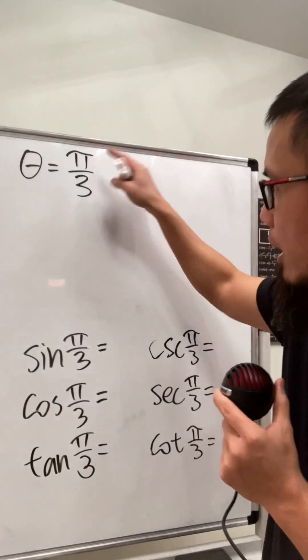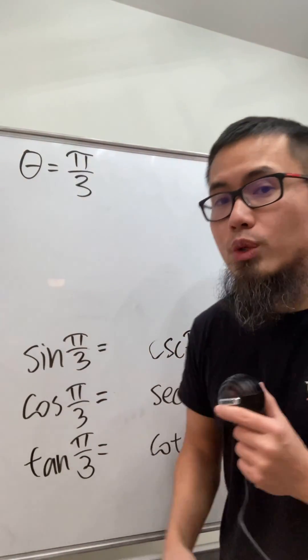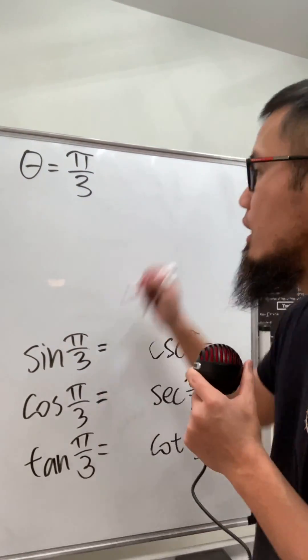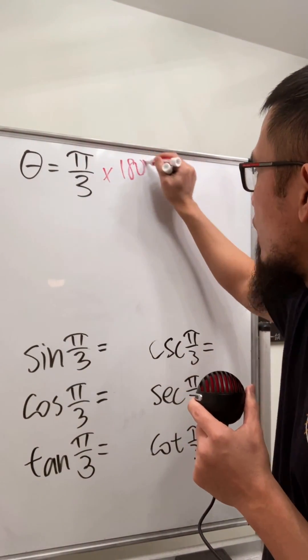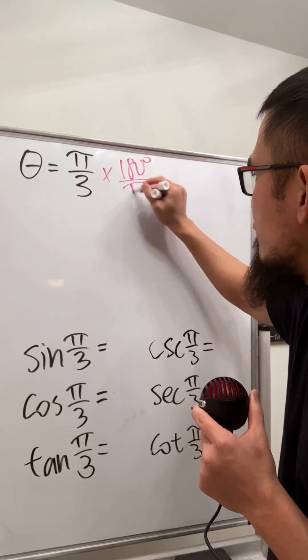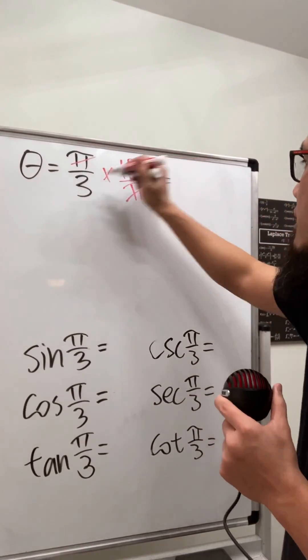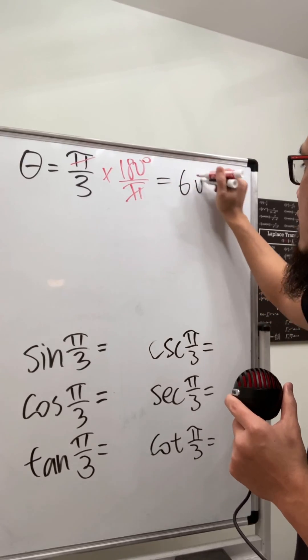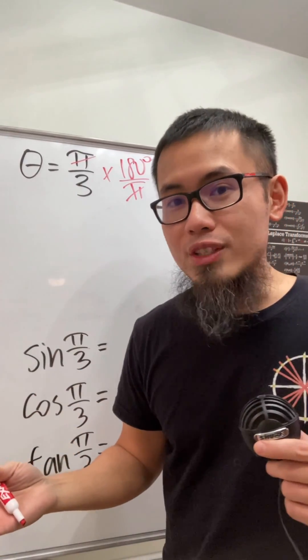We have the angle theta = π/3 and we are going to calculate all the trig functions. I recommend multiplying by 180 degrees over π first so you can get it in degrees — this is the same as 60 degrees.